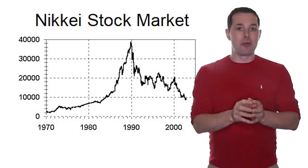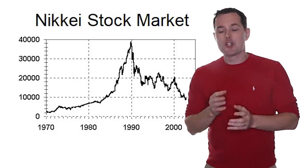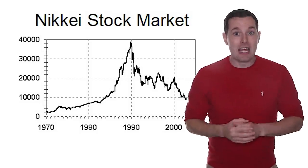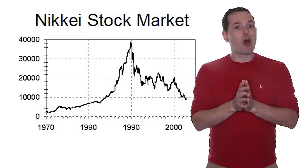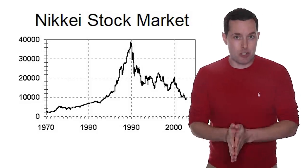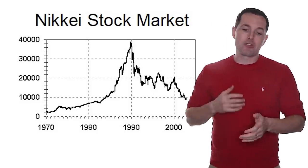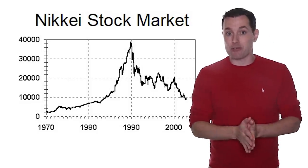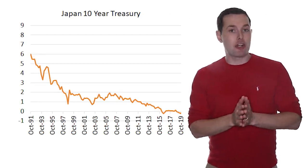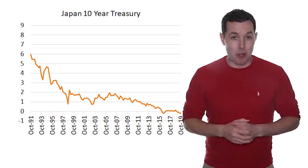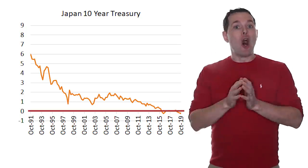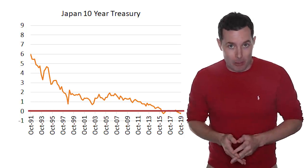It could be argued that the Bank of Japan took too long to react and to start lowering interest rates. And perhaps that's part of the reason why the U.S. was so aggressive with lowering interest rates after the Great Recession. Here's a chart of Japan's 10-year Treasury bond going back to 1991. As we may notice, interest rates are now negative on the Japanese 10-year Treasury bond.